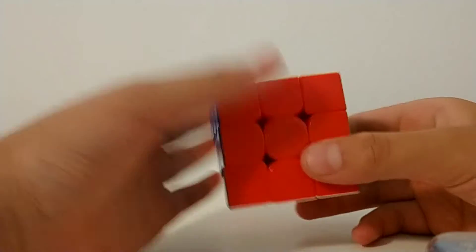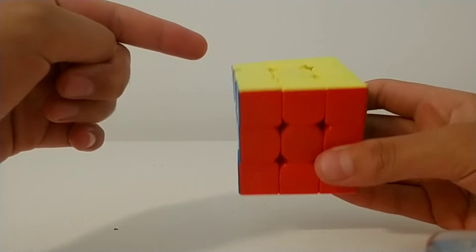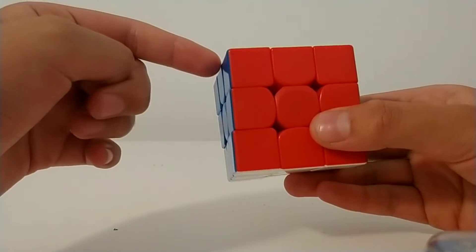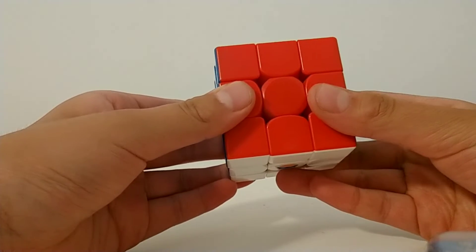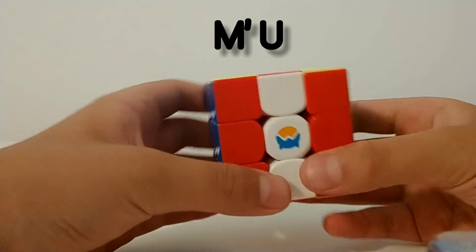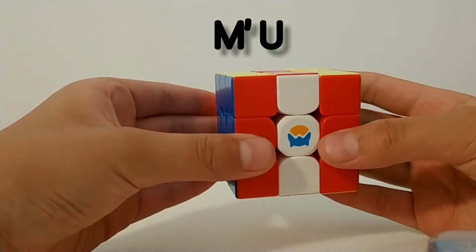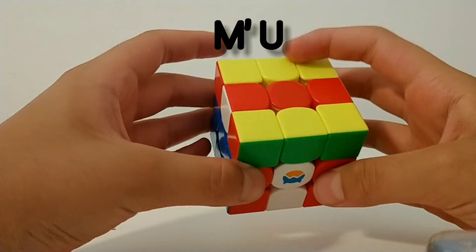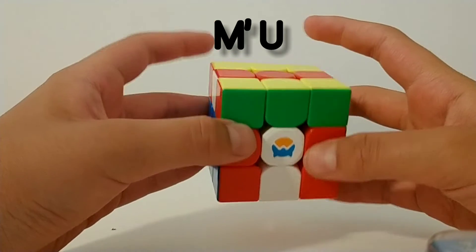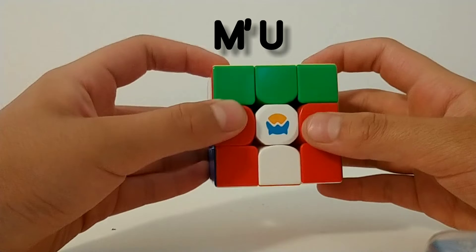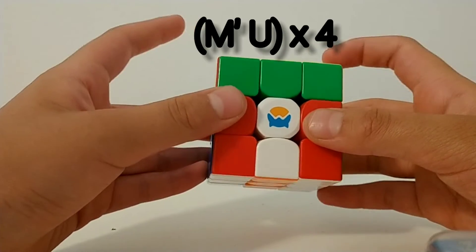Now I'm back. You start from a solved Rubik's cube, and then you do M prime, which is going up, and then U, which is clockwise. So that's one time, you're supposed to do that four times.